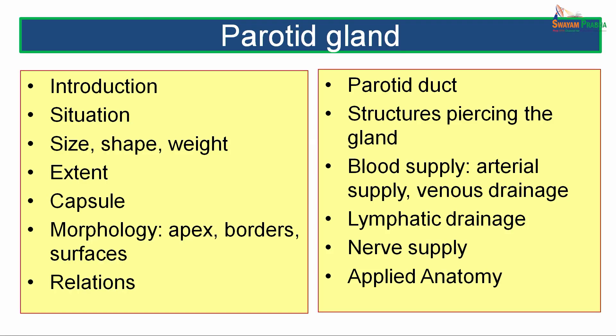We will be discussing the parotid gland under these following headings: introduction, situation, size, shape, weight, extent, capsule, morphology — which includes the apex, borders and surfaces — relations, parotid duct, structures piercing the gland, blood supply including arterial supply and venous drainage, lymphatic drainage, nerve supply, and finally applied anatomy.